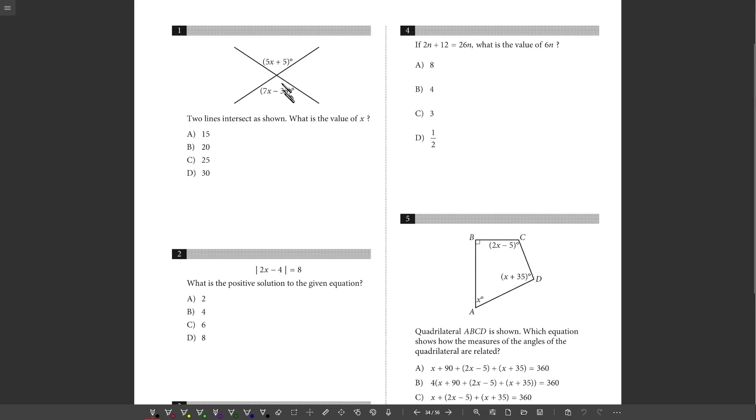Number one, what's the value of x? If these lines are drawn intersecting, then these two angles that are across from each other are vertical angles, which means they're congruent. So I can set 5x plus 5 equal to 7x minus 35. Doing some rearranging, I get x is 20, choice B.